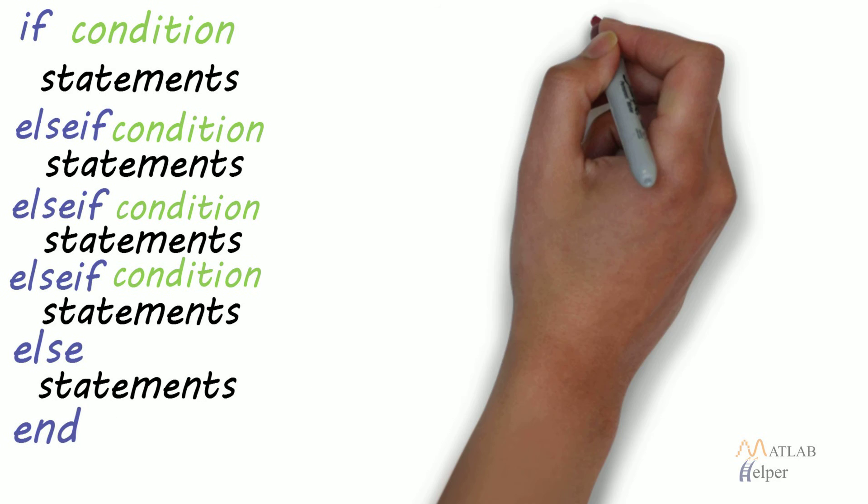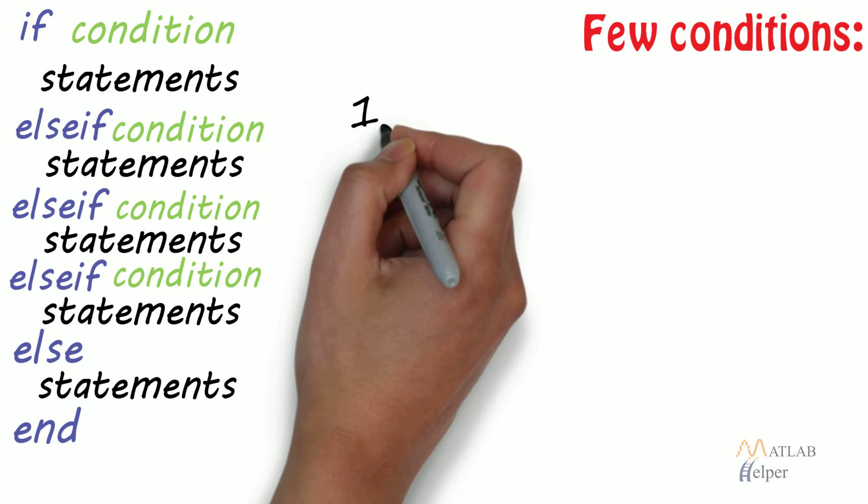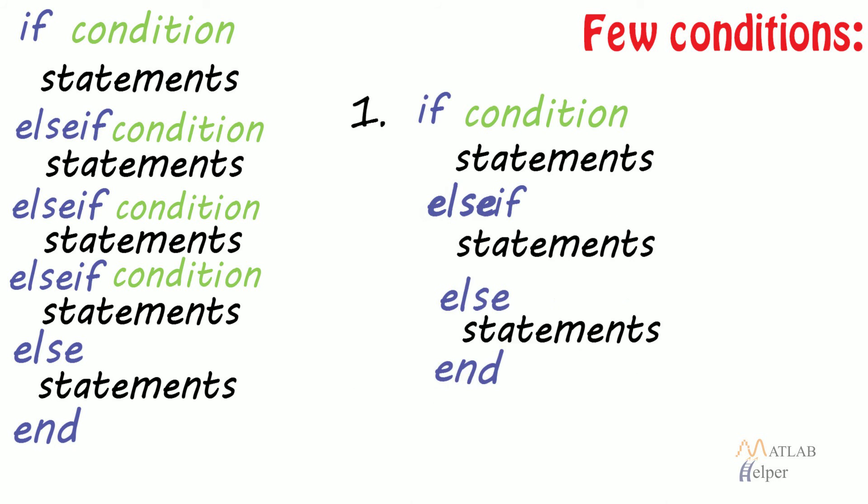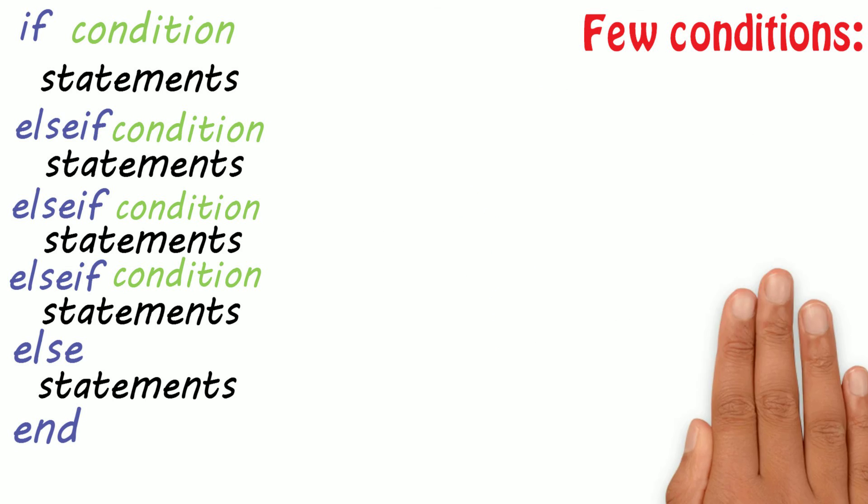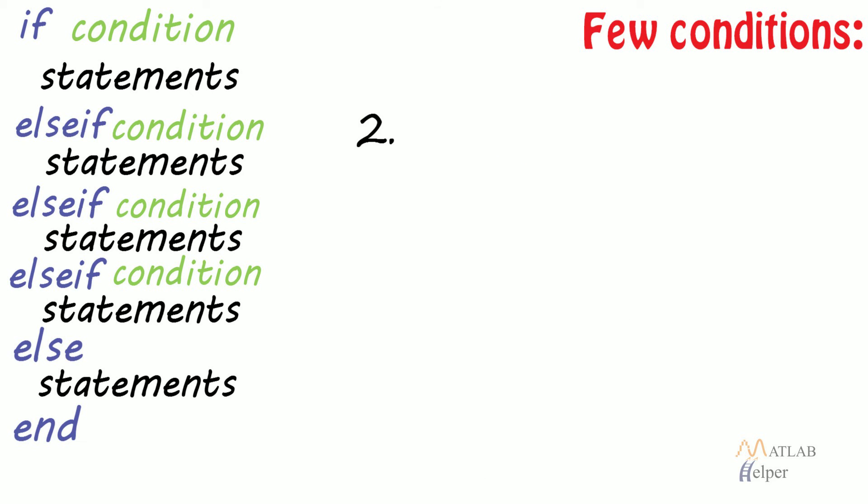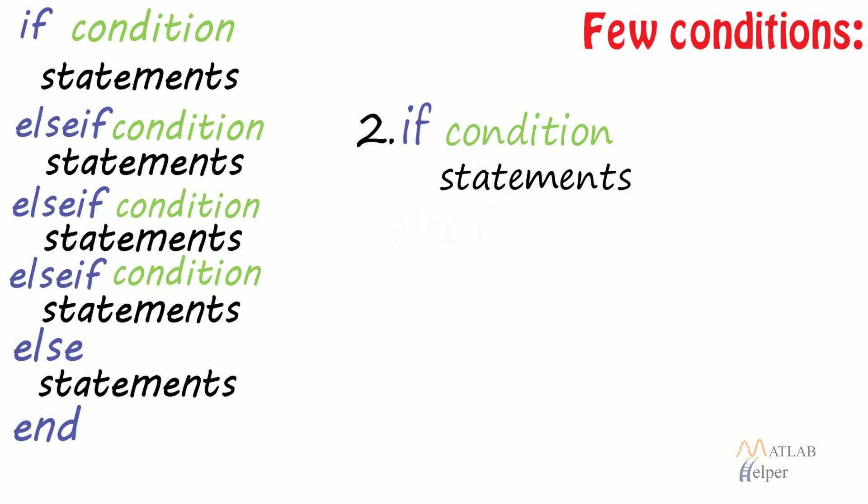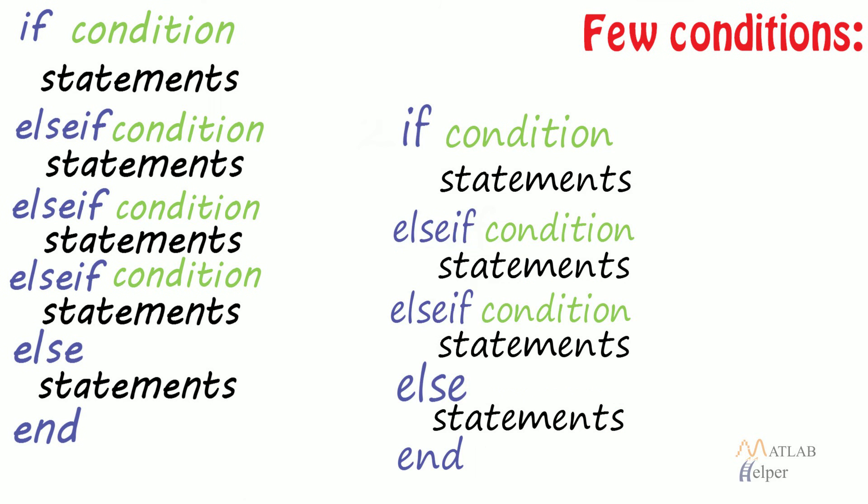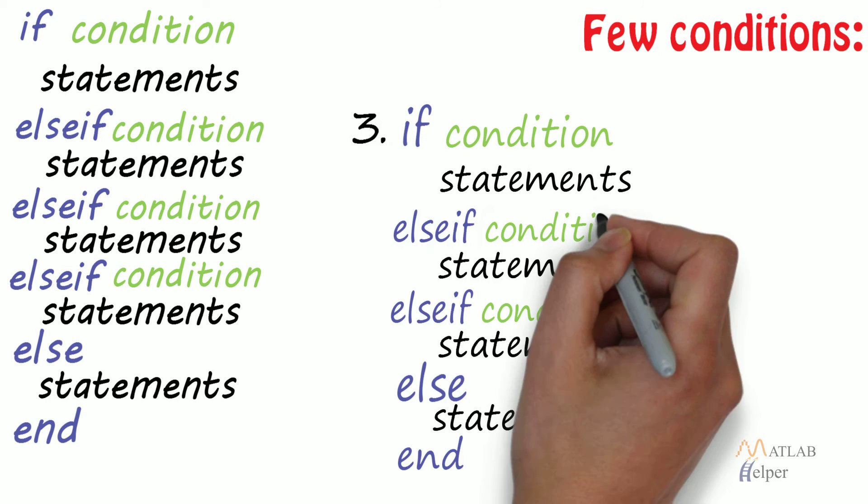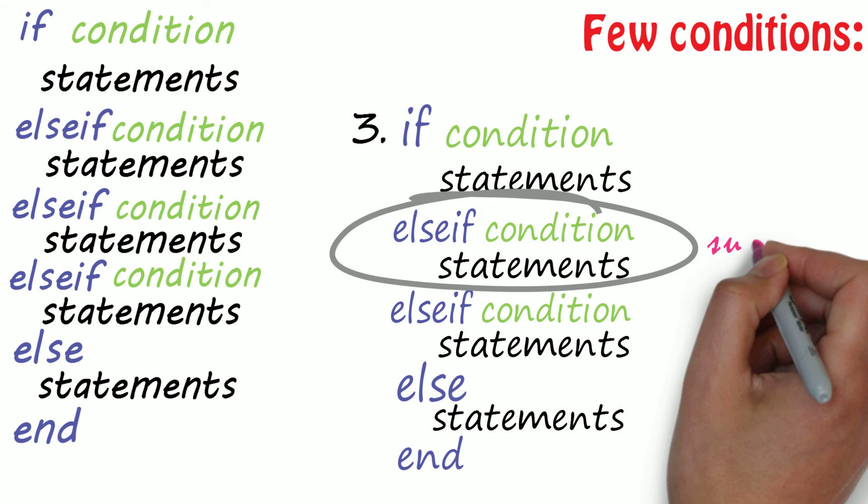Few conditions for if, else if, else statements are: An if can have zero or one else, and it must come after any else ifs. An if can have zero or many else ifs, and they must come before the else. Once an else if succeeds, none of the remaining else ifs or else will be tested.